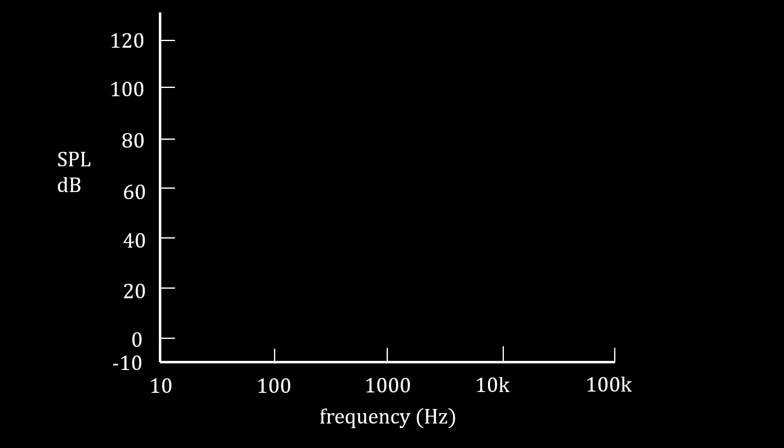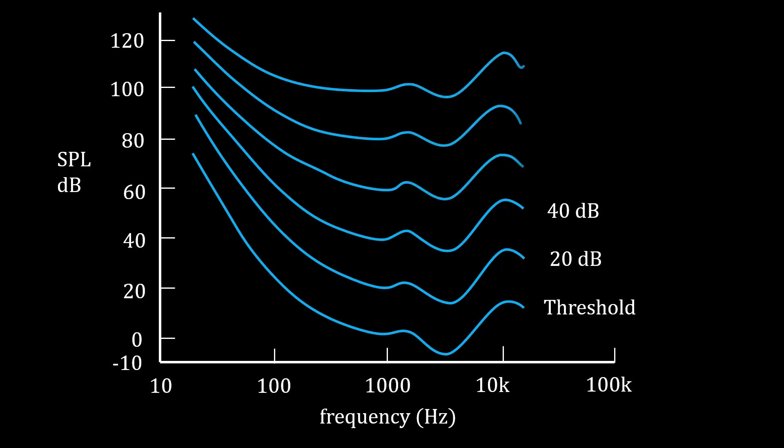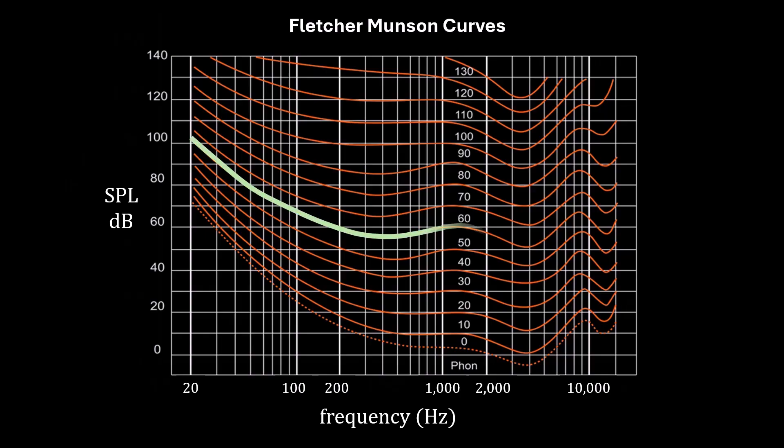They started by finding the quietest sound people could hear at each frequency. This is called the human hearing threshold. Then they moved up and found the curve where everything sounded like it was at 20 decibels. They repeated it again for 40 decibels, and so on and so forth until they ended up with a set of equal loudness curves. Now calling them dB curves got confusing, so Stanley Stevens, who we'll talk about later, decided to come up with a new unit called a phon. And a phon is basically the name of the curve where everything sounds equal along the curve with a reference to 1000 Hz at that decibel value. So for example, the 20 phon curve, everything sounds like it's at 20 dB at 1000 Hz.